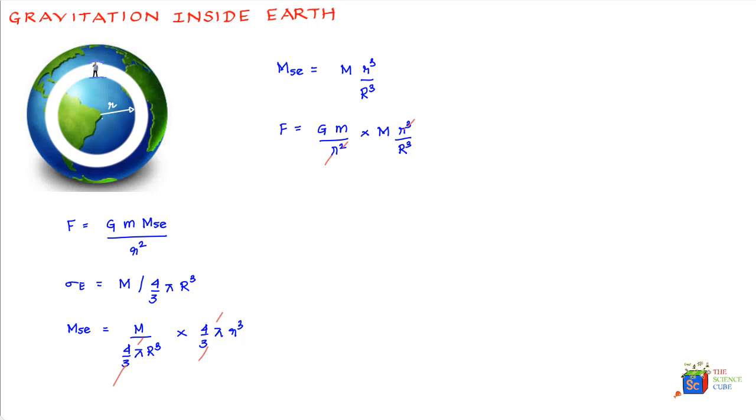And let's go and cancel the small R over here. We get one single R up over here, and therefore we can write that the force of gravitation on you is equal to G into your mass into mass of the full Earth divided by the radius of the full Earth into the radius of the small Earth.